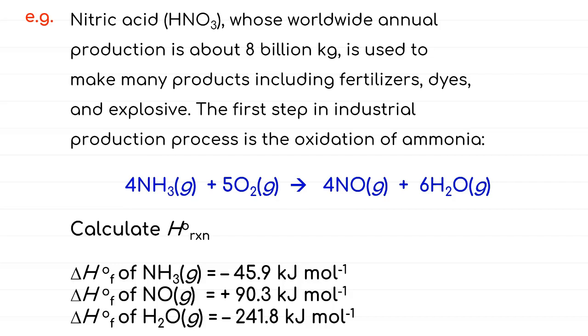Nitric acid HNO3, whose worldwide annual production is about 8 billion kg, is used to make many products including fertilizers, dyes, and explosives. The first step in industrial production process is the oxidation of ammonia. The question already gives you the equations when ammonia being oxidized, where 4NH3 gas react with 5O2 gas to form 4NO gas and 6H2O gas. Then, they ask you to calculate the enthalpy of reactions. This enthalpy of reactions belongs to the oxidation of ammonia given in blue.